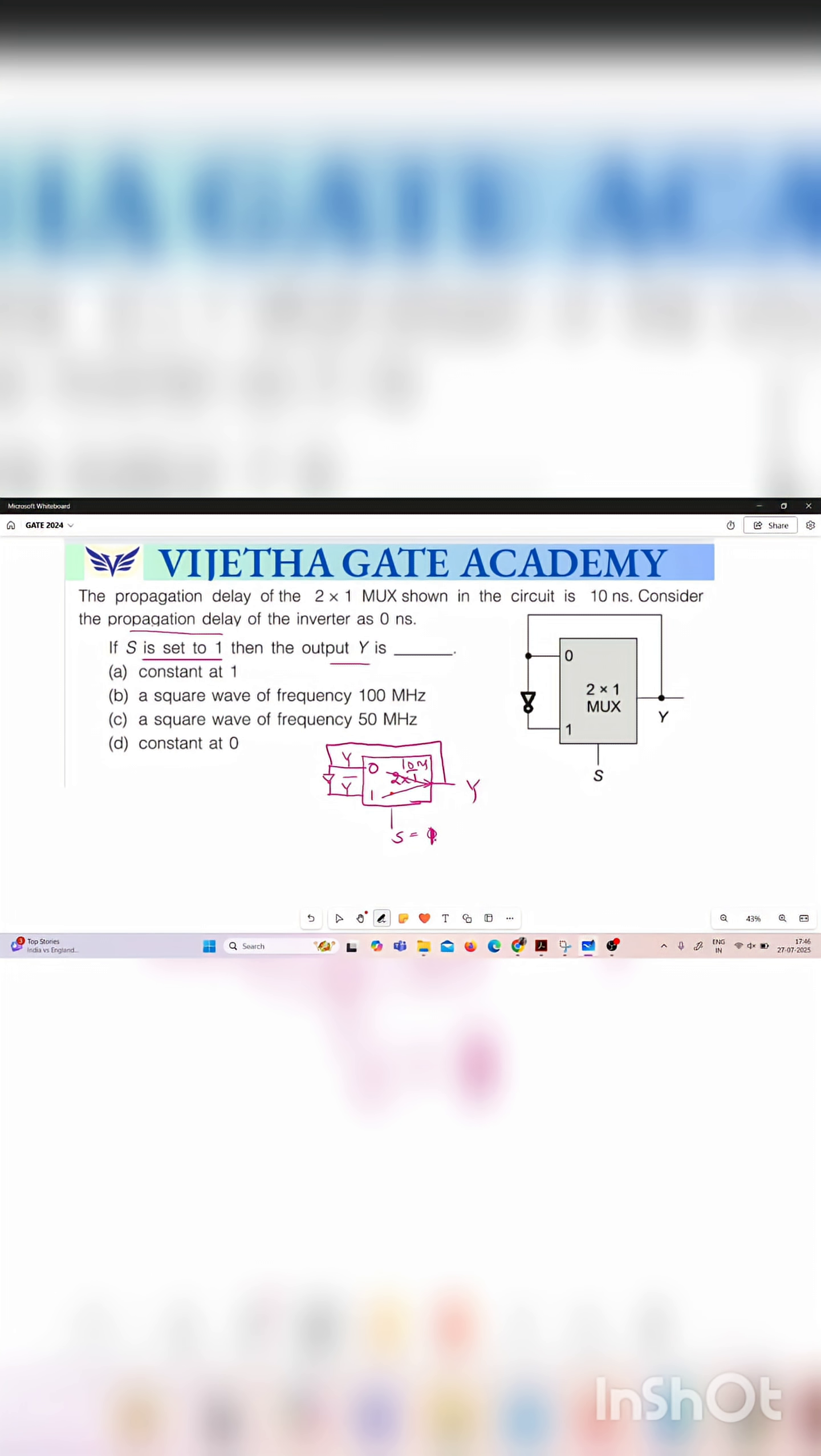So the output will be y bar always. But here in this option there is no options y bar is there. So we have to set what is y. Let us assume y is equal to 0.